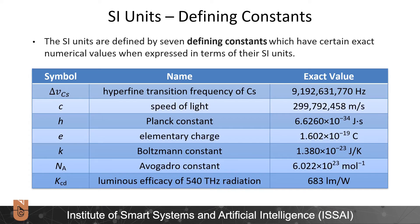The SI units are defined by seven defining constants, which have certain exact numerical values when expressed in terms of their SI units. For instance, c is one of those constants — the speed of light — and it is equal to 299,792,458 meters per second.